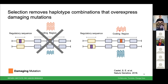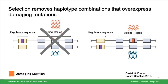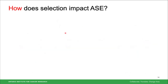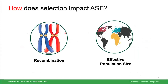In 2018, Castellà et al. showed that selection removes haplotype combinations that overexpress a damaging mutation — a sort of protective mechanism of ASE against highly deleterious mutations. My question is: how does this actually happen? We know it's occurring and know the overall action, but what in our genome is contributing to this? My research investigates aspects of our genome that contribute to the efficiency of selection and how it influences allele-specific expression.